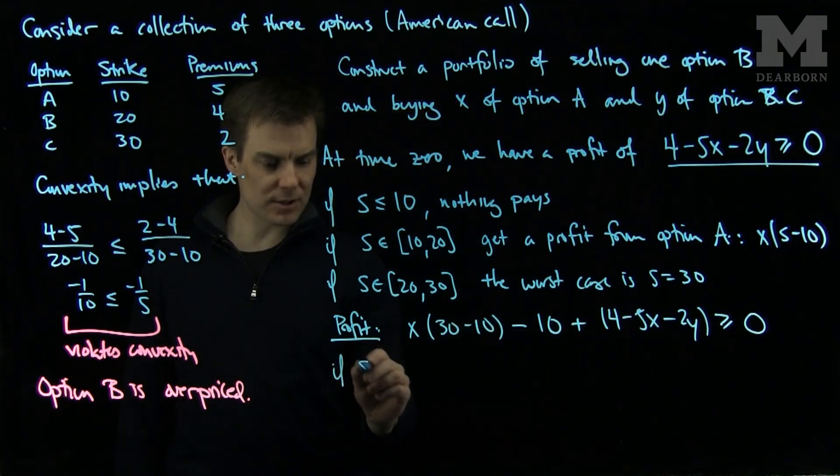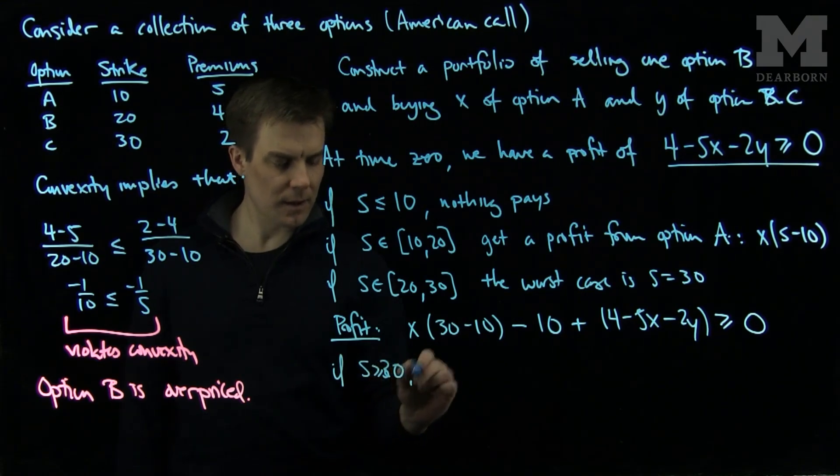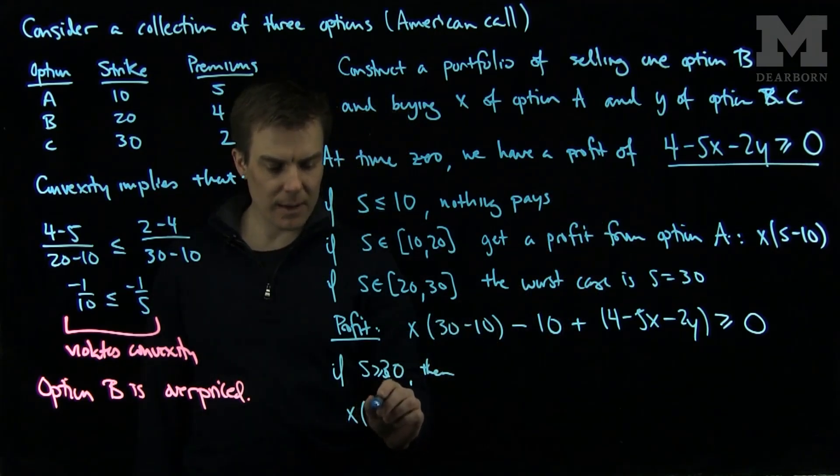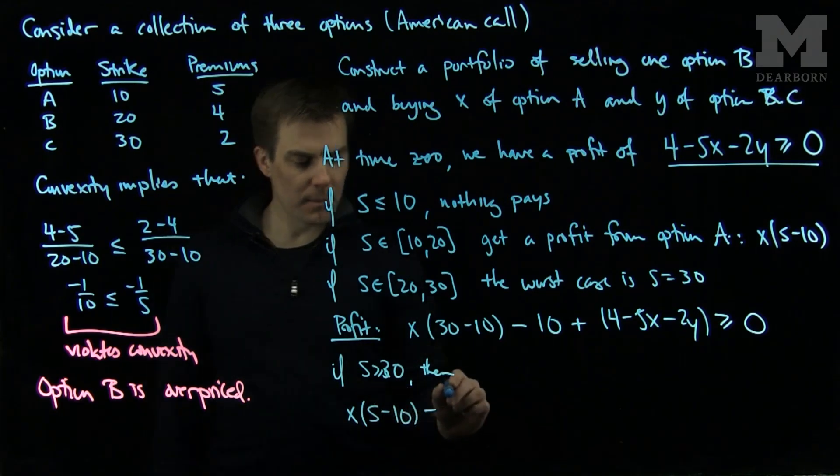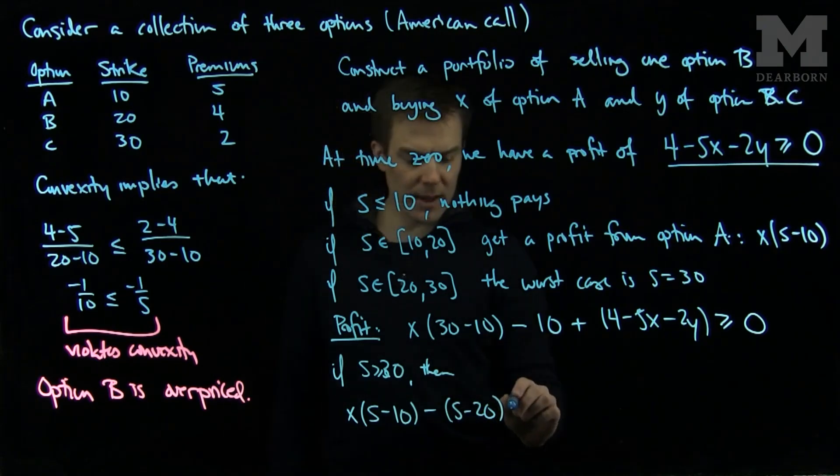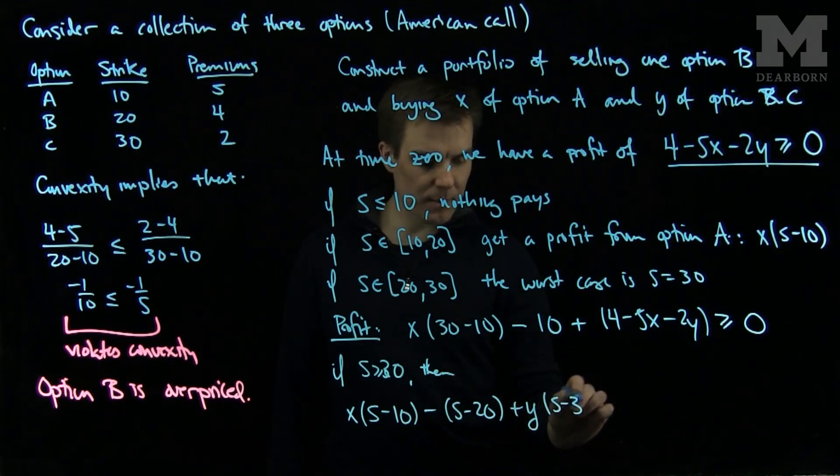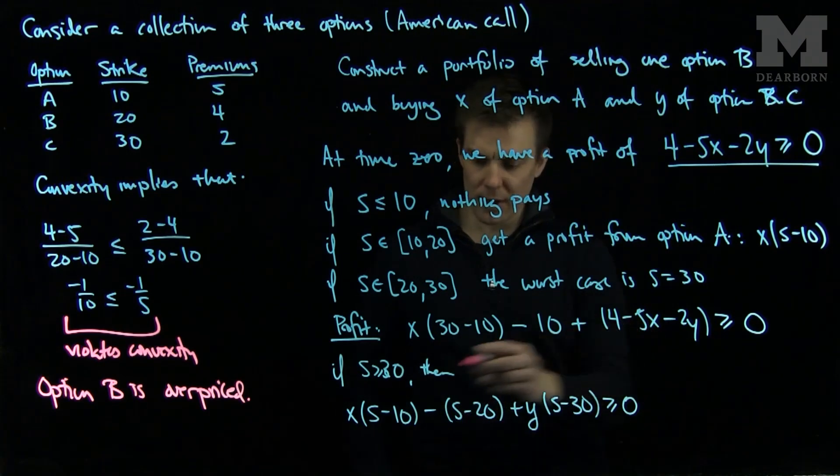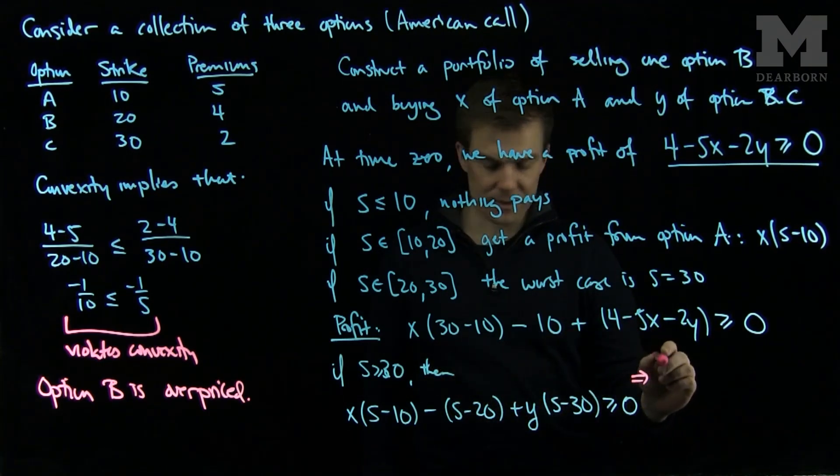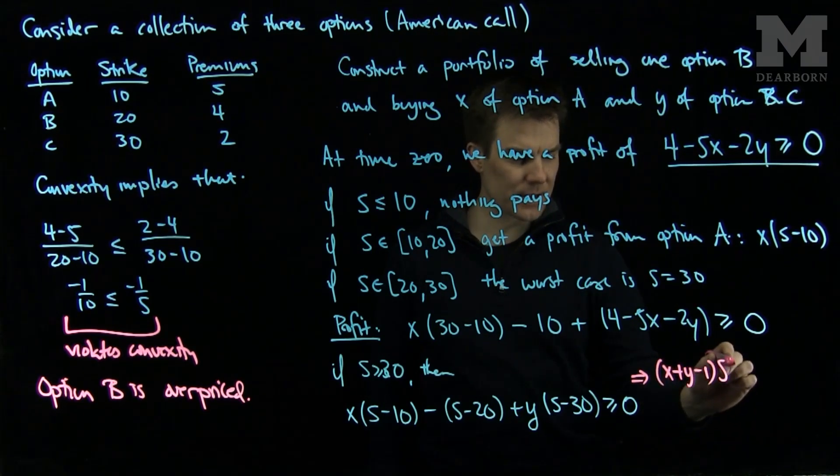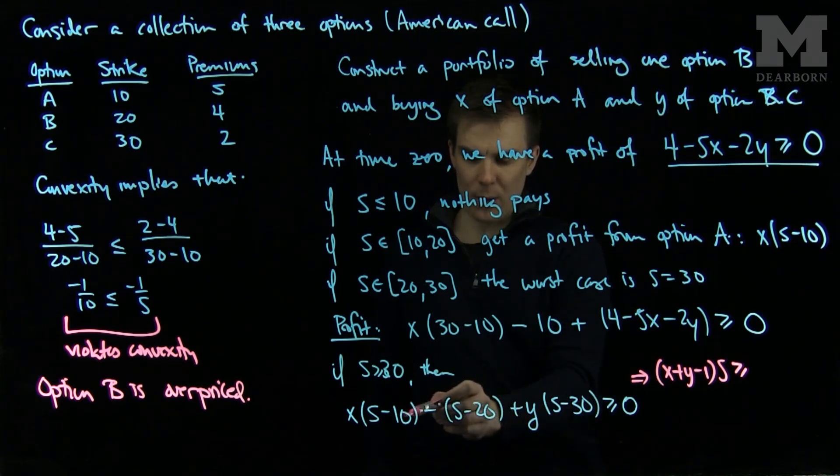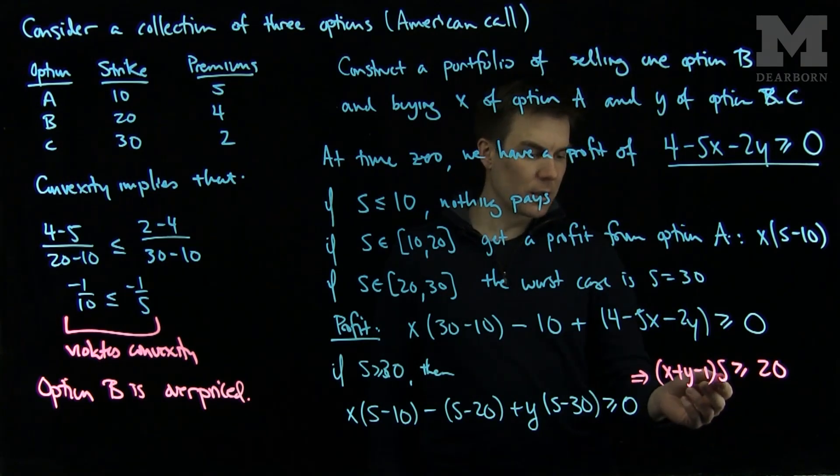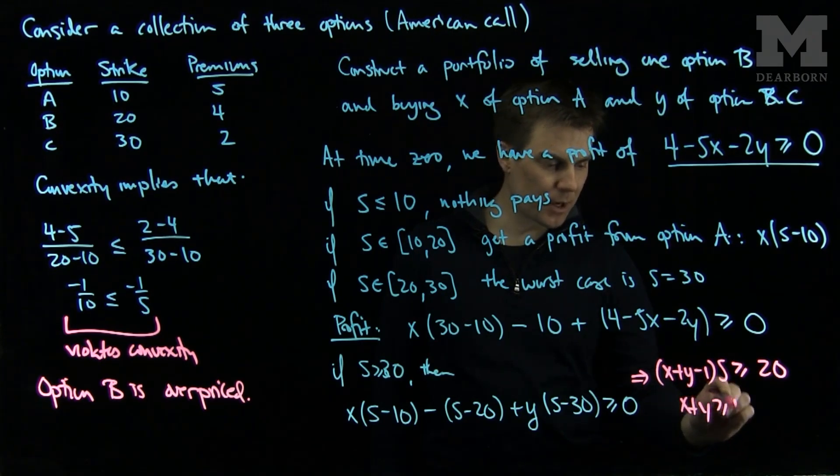Finally, if S is larger than 30, we look at all the call options. We will have x times S minus 10, minus S minus 20, plus y times S minus 30. I can write this expression as x plus y minus 1 times S. Since the stock price is arbitrarily large, we'll see that we need x plus y to be greater than or equal to 1.